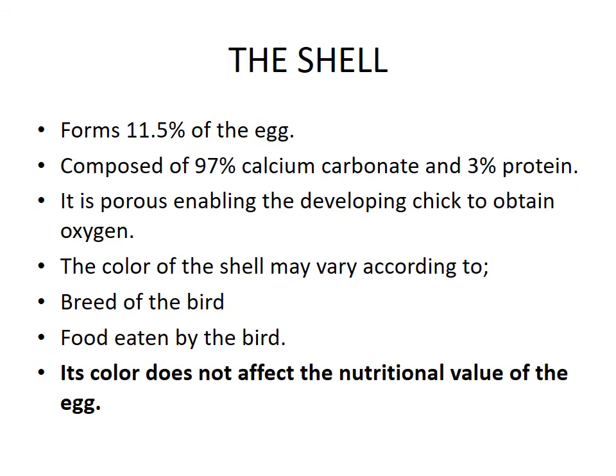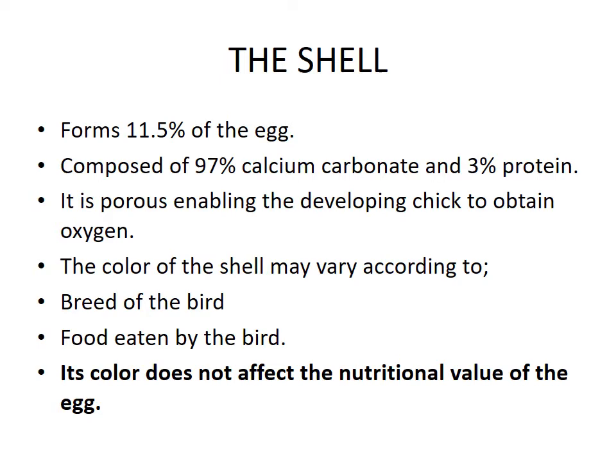We start with the shell. It forms 11.5 percent of the egg and is composed of 97 percent calcium carbonate and 3 percent protein. It is porous, enabling the developing chick to obtain oxygen. The color of the shell may vary according to the breed of the bird and the food eaten by the bird. Note that its color does not affect the nutritional value of the egg.